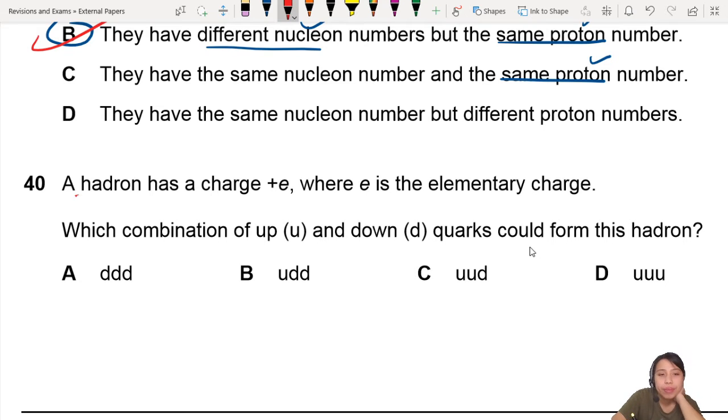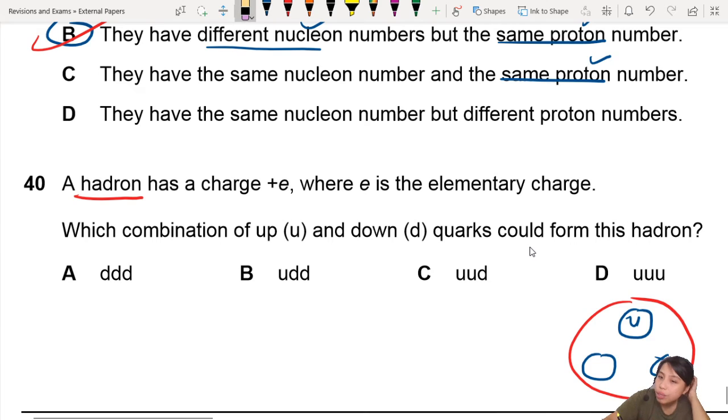Hadron is something that has 3 particles in it. 3 quarks. So, something like UUU or DDD or UUD or something like that. But you need the total charge to add up to be positive 1E.